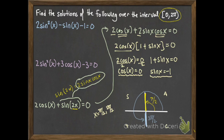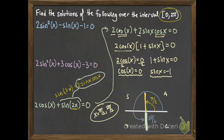The final solutions for this equation on the interval 0 (included) to 2π (excluded) are x equals π/2 and x equals 3π/2.